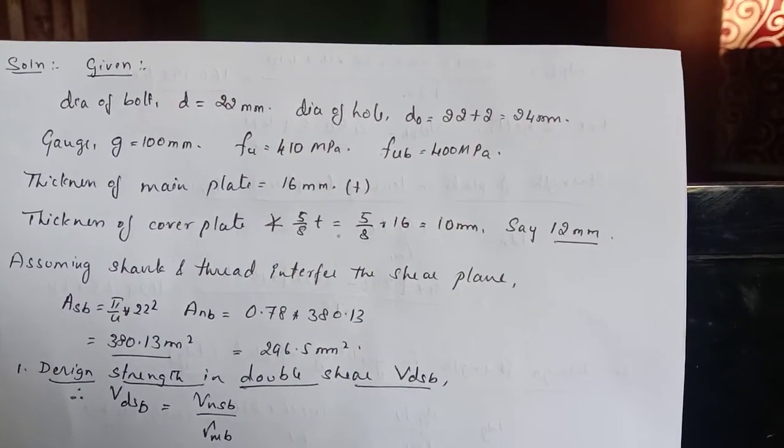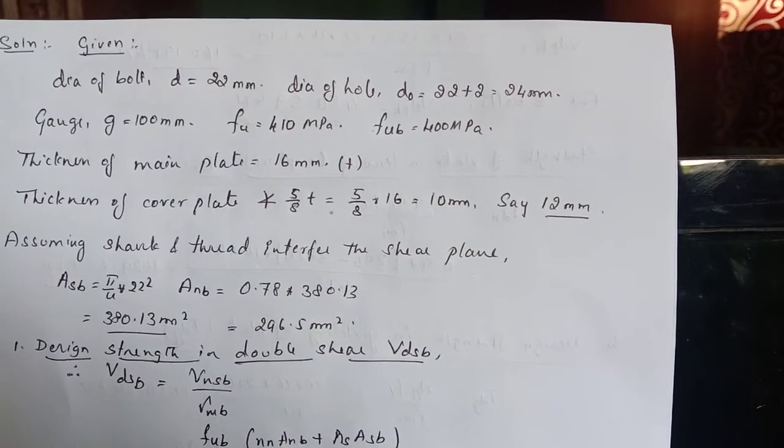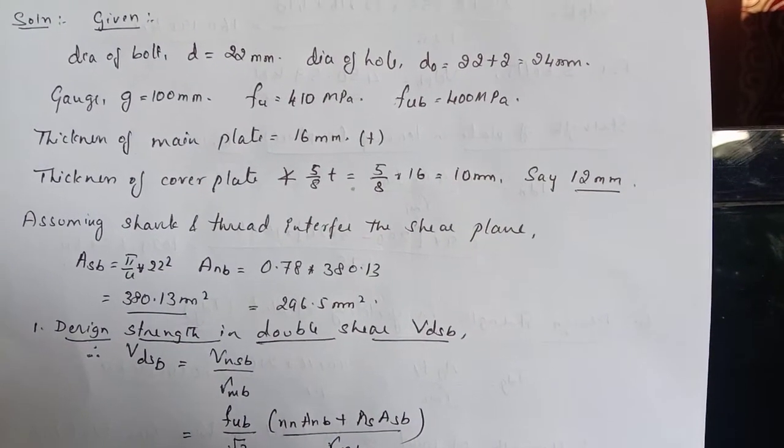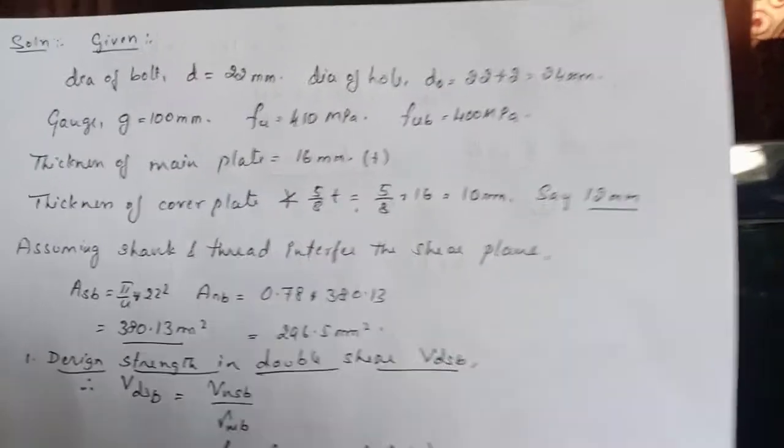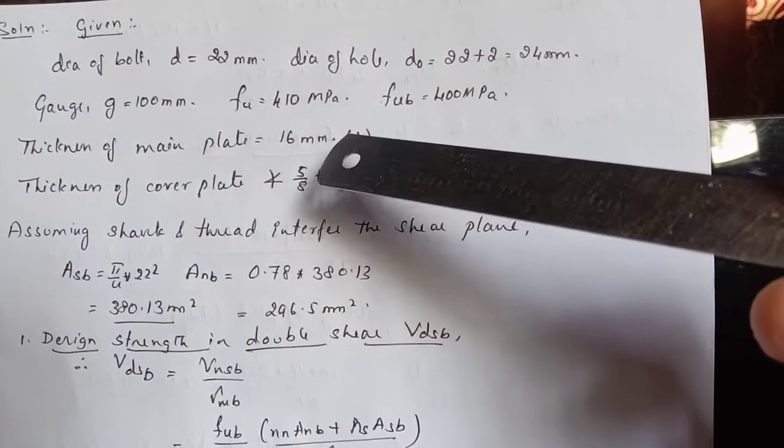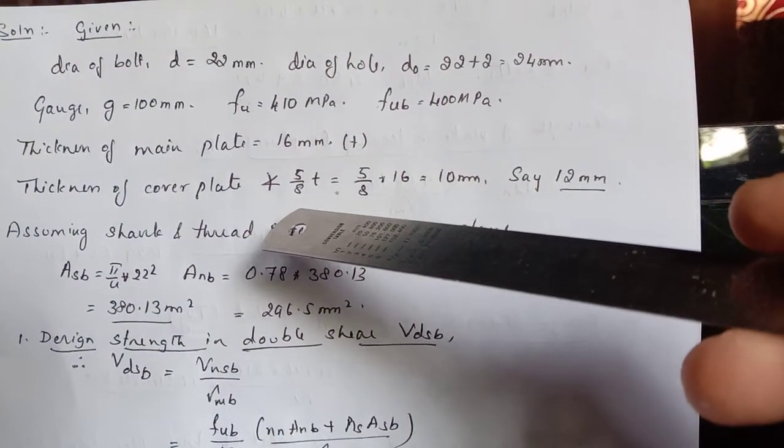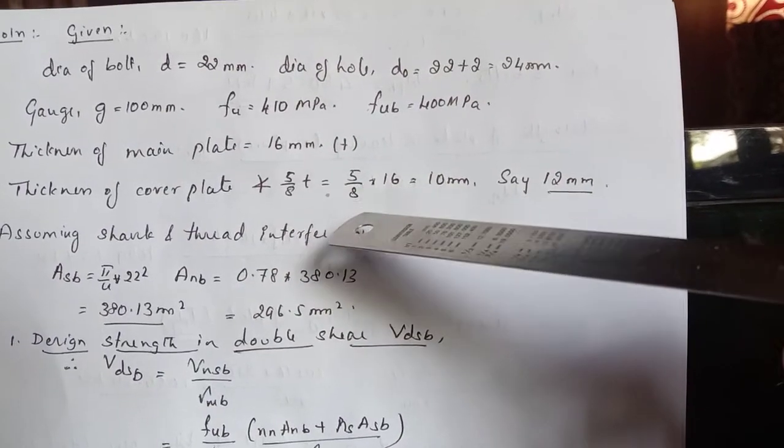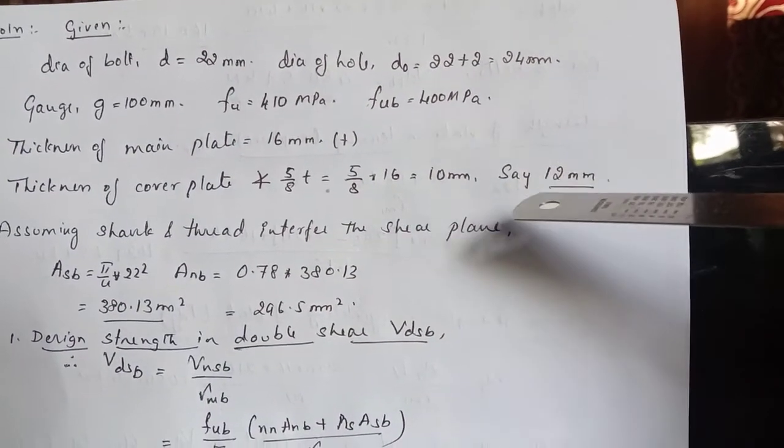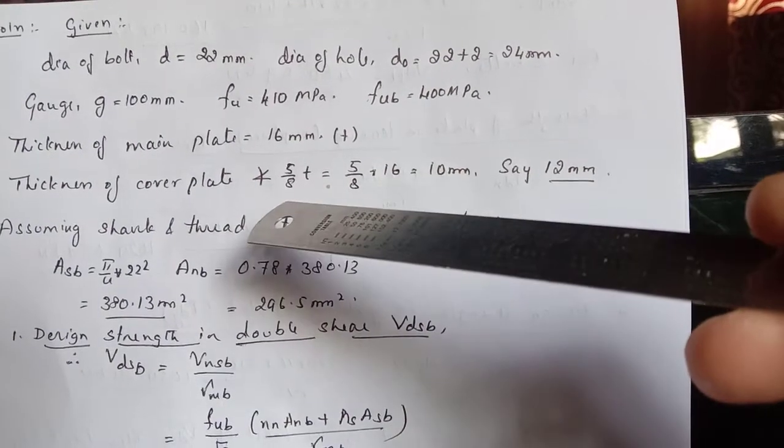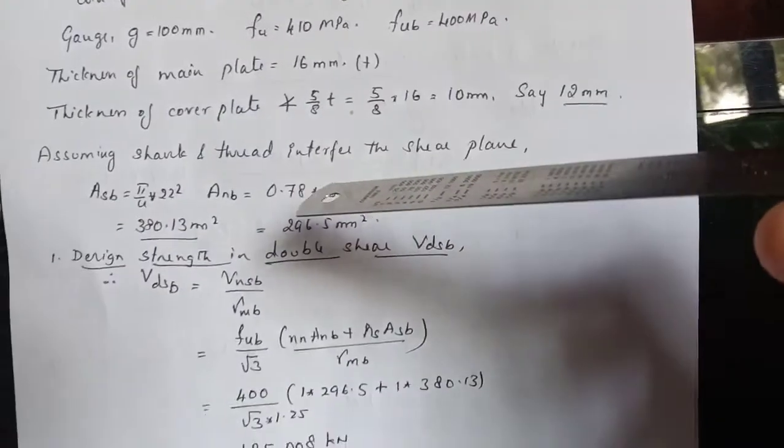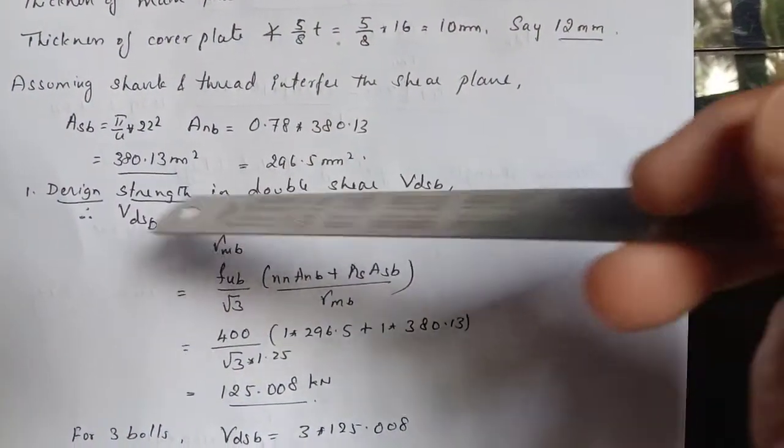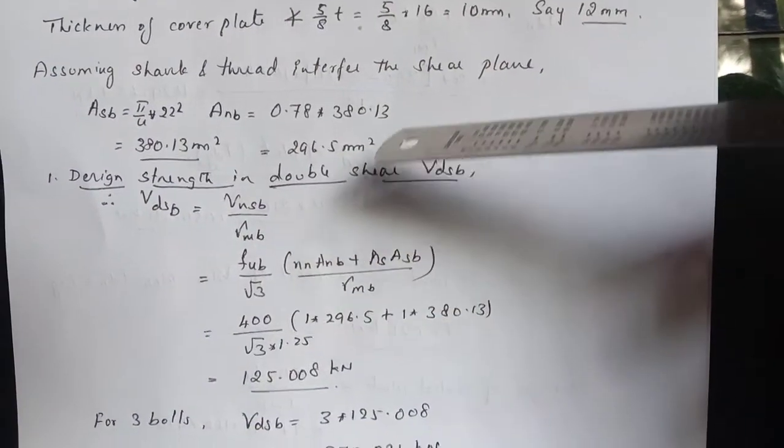So now let us solve this particular problem. So here the given values are diameter of the bolt is 22 mm, diameter of the hole will become 24 mm. The gauge is 100 mm, FUA and FUB 410 and 400 MPa respectively. Thickness of the main plate is 16 mm that is T. Now thickness of cover plate is according to the code it shall not be less than 5 by 8 times T. So that is equal to 5 by 8 into 16 works out to be 10 mm. Let us say it as 12 mm because here we have shall not be less than. So let us assume here shank and thread interfere the shear plane. So we get ASB and ANB as 380 and 296.5 mm square respectively.